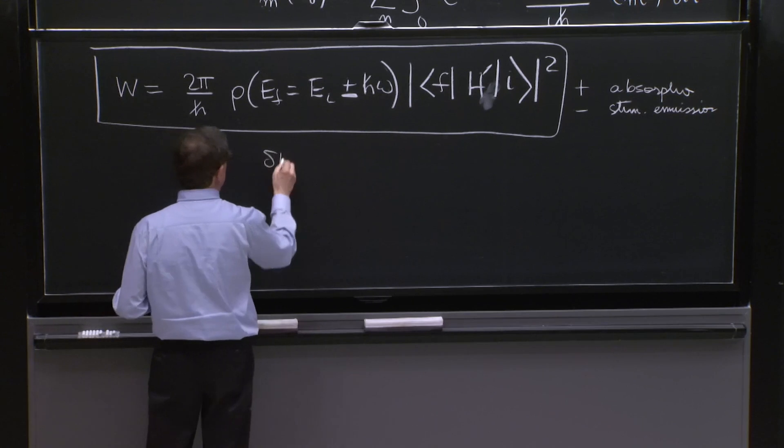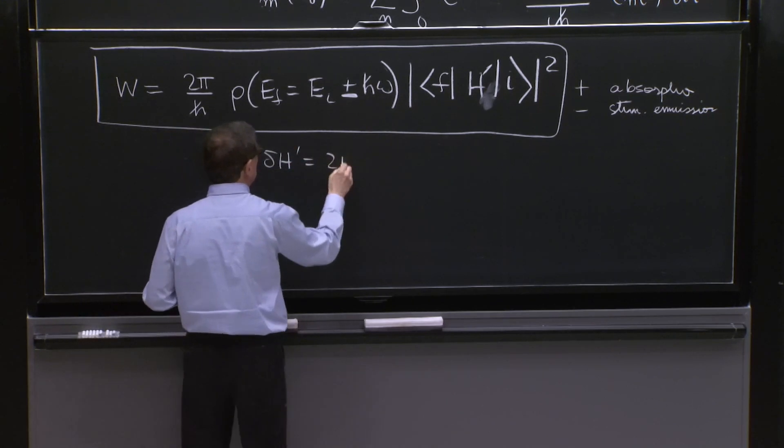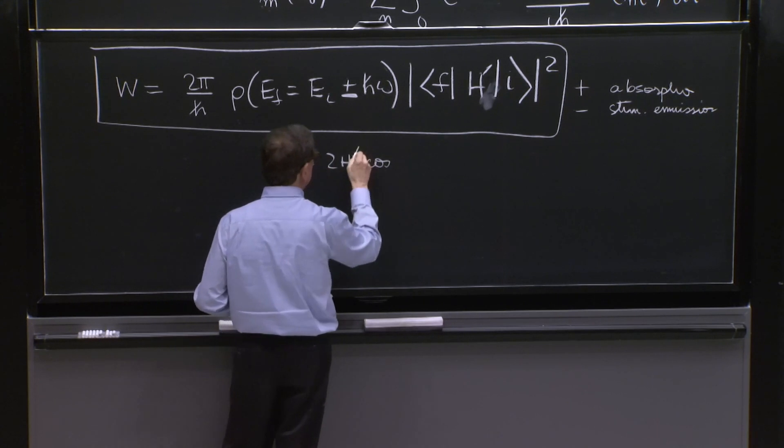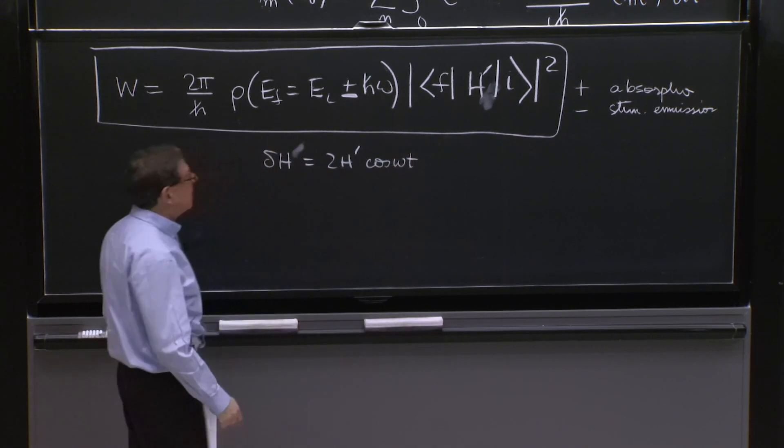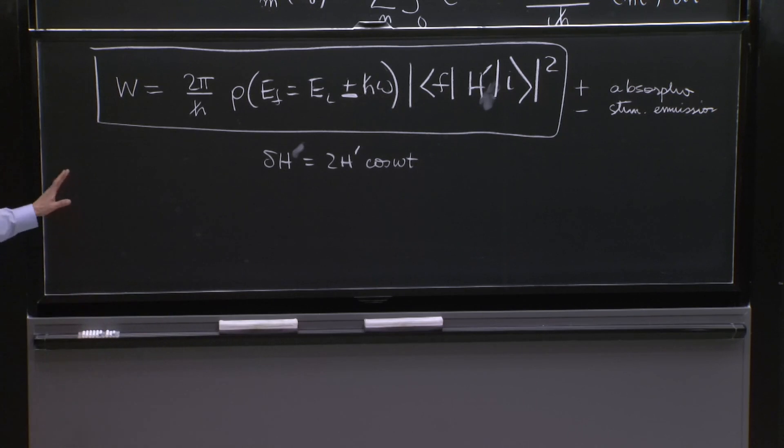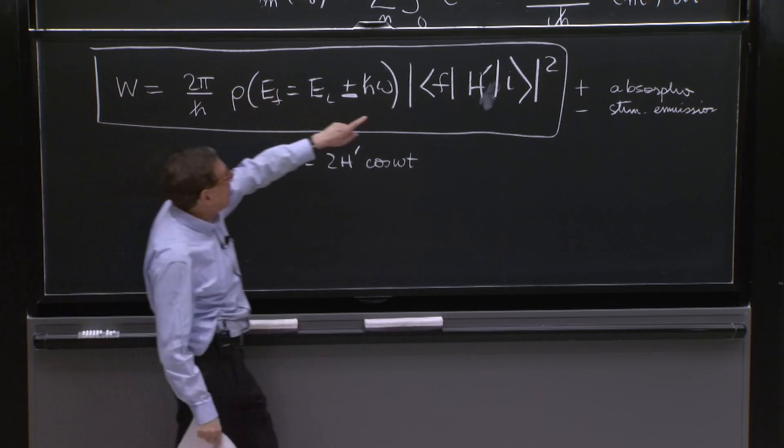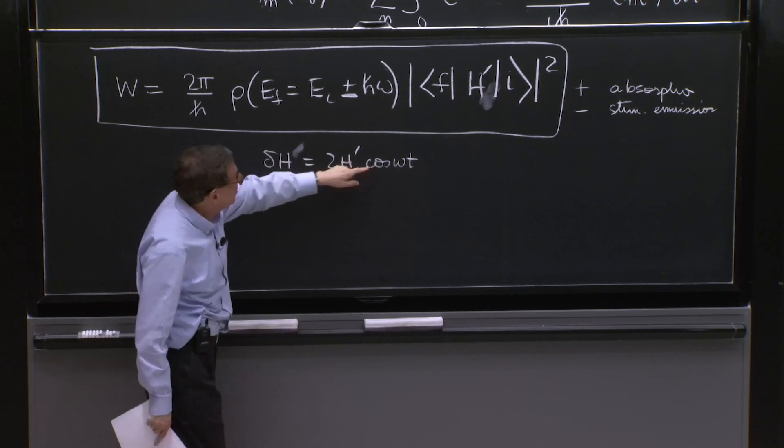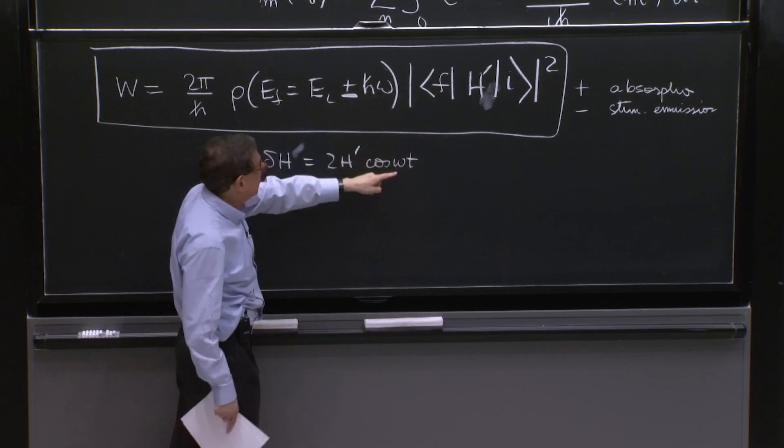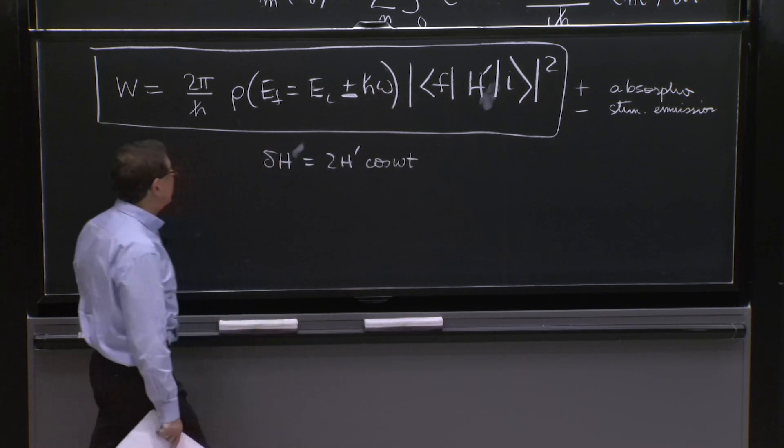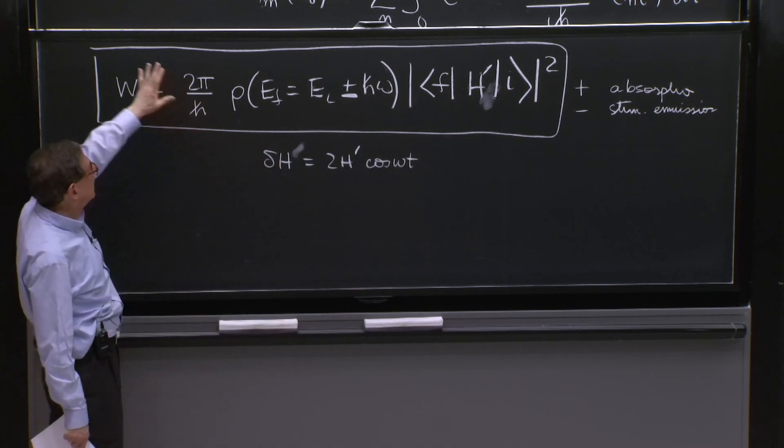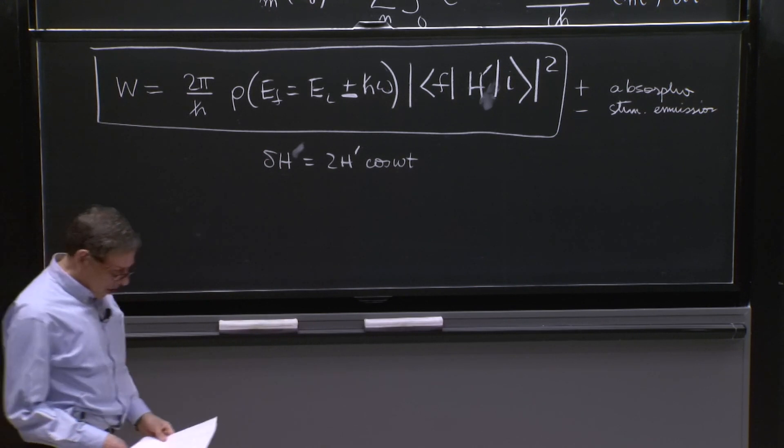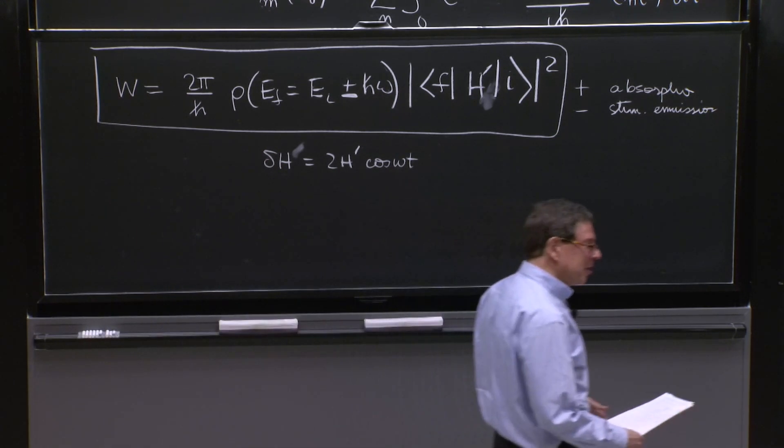And if you want a reminder here, was that delta h prime was 2 h prime cosine delta h was 2 h prime cosine omega t. So this reminds you that this h prime you have here is the matrix element of the perturbation with this convention. This omega you have here is the frequency of the perturbant Hamiltonian. And that's what has happened.